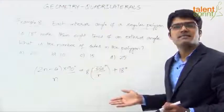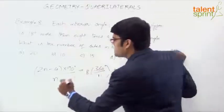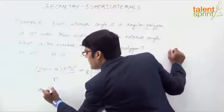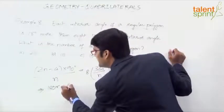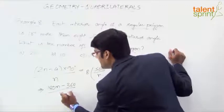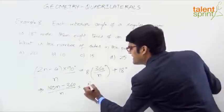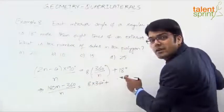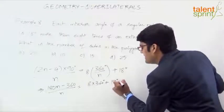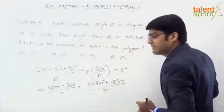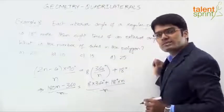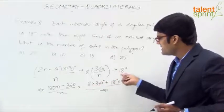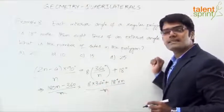Now simplify to find n. Expanding: (2n−4) × 90 = 180n − 360. Taking n as the common denominator on the right side gives (8 × 360 + 18n) / n. We can cancel n on both sides, so we get 180n − 360 = 8 × 360 + 18n. This simplifies to 180n − 18n = 8 × 360 + 360.